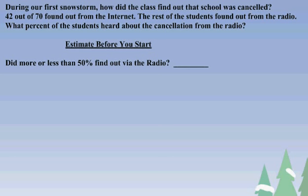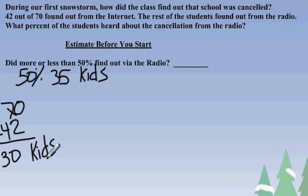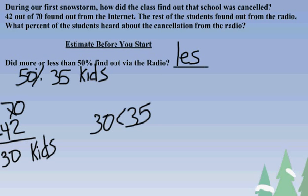Remember, let's estimate before we start. I ask myself this question: did more or less than 50% of the kids hear about the cancellation on the radio? Let's say that 50% of the kids did — that would have been about 35 kids. There are 70 kids altogether, and 42 heard about it on the Internet, so that's roughly 30 kids on the radio. 30 is less than 35, so my percent of kids who found out on the radio should be less than 50%.